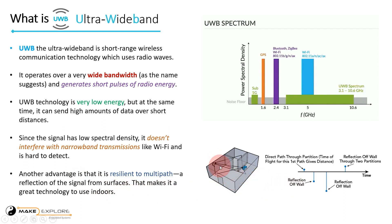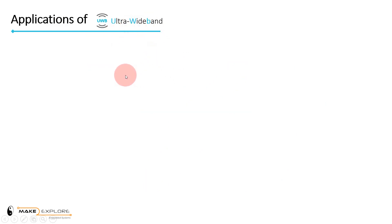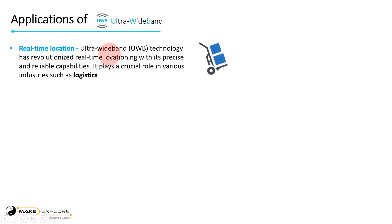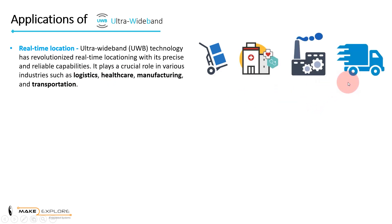Another advantage is that it is resilient to multipath, which makes it a great technology to use indoors. Ultra-wideband has a wide range of applications. Accuracy and distance measurement is a key feature of UWB technology. Hence it has revolutionized real-time locationing with its precise and reliable capabilities. Ultra-wideband plays a crucial role in various industries such as logistics, healthcare, manufacturing, and transportation.